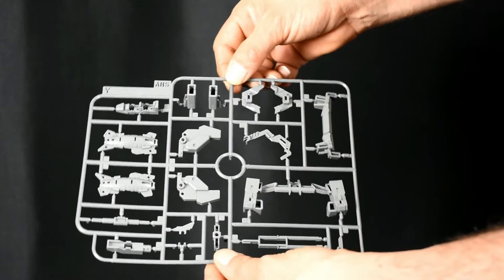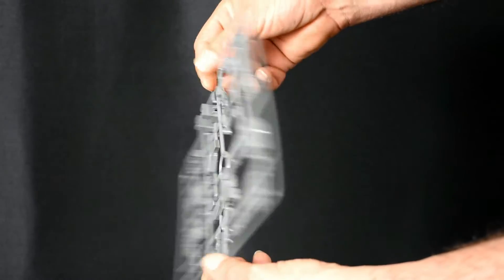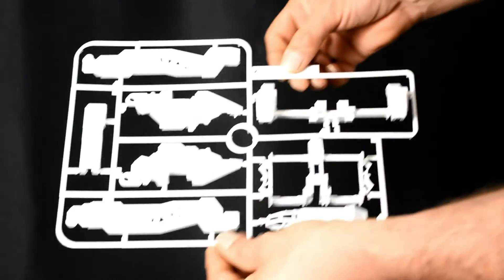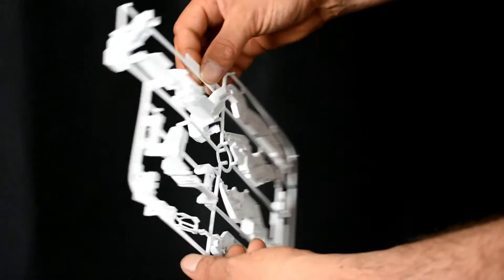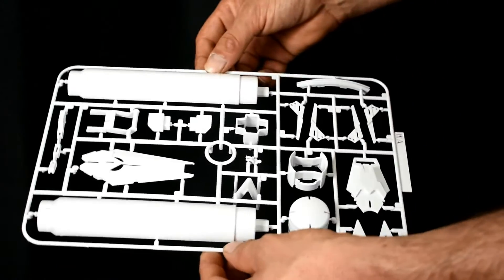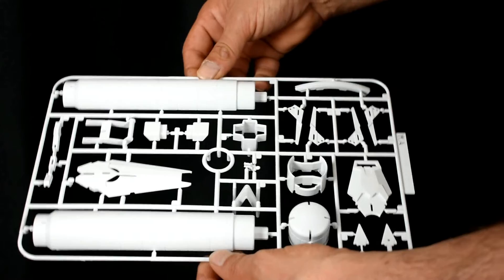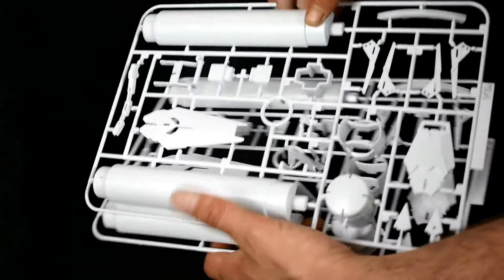Runner Y, more of the leg frame. Runner Z, part of the fuel tanks, the stands for. Runner WA, actual fuel tanks. More of the shields. You get two of those.